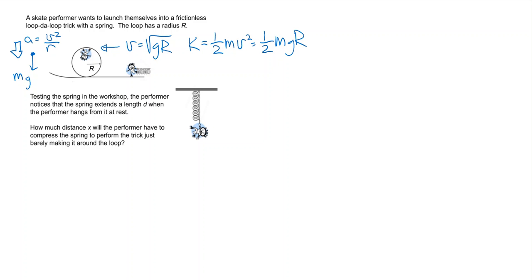So what this performer wants to do is use potential energy in the spring, use spring potential energy to get safely all the way around the loop to get up to the top with enough kinetic energy.